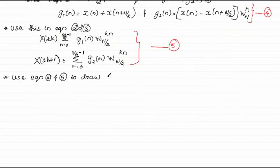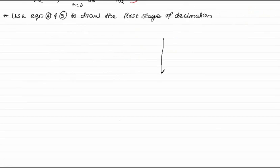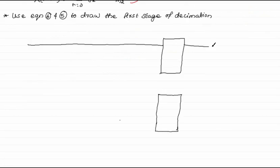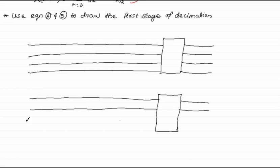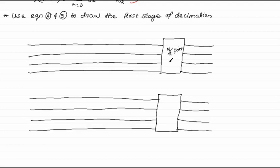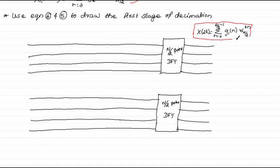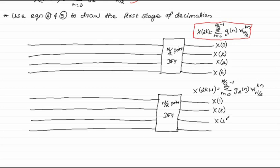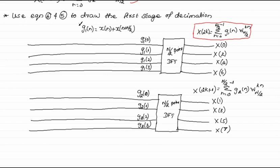Using equations 4 and 5, we draw the first stage of decimation. Here, the N-point DFT is divided into two N by 2 point DFTs. X of 2k is represented by this equation where K equals 0 to N by 2 minus 1, and X of 2k plus 1 is represented by this equation where K equals 0 to N by 2 minus 1. Even values of X of K are represented in terms of G1 of N, and odd values in terms of G2 of N.